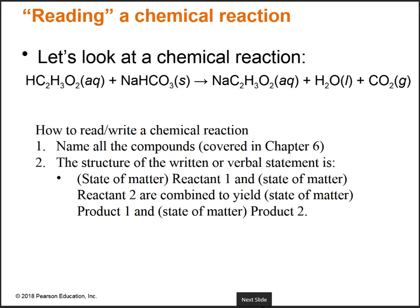Let's look at the same chemical reaction again for all its components — states of matter, yields arrow, different compounds. We need to be able to read and write chemical reactions, which means naming each compound. That was covered in Chapter 6. If you're struggling with naming, practice — there's a lot posted on Blackboard. The structure for the written or verbal statement is: state of matter, then reactant name, for however many reactants you have.